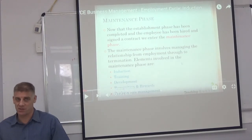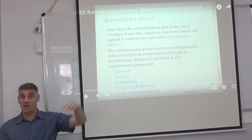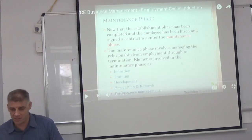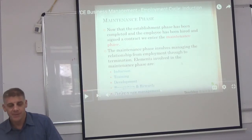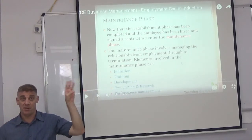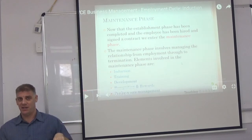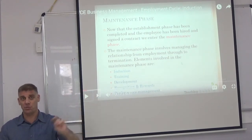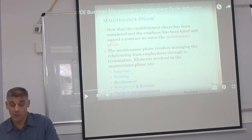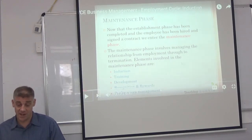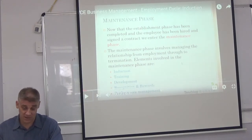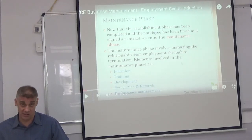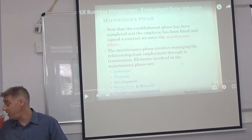According to Western Australia and our syllabus, there are four elements to the employment cycle. Maintenance is number three. Right now in the Western Australian style we're in number two, which is called development. Development is not maintenance in Western Australia, but apparently in Victoria, Australia it is part of maintenance.